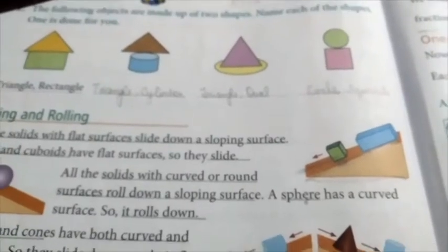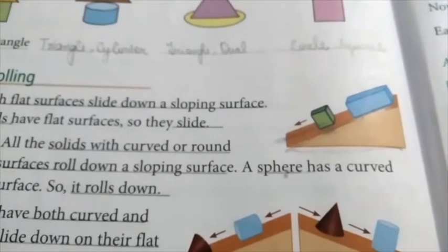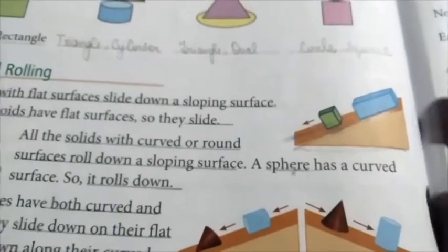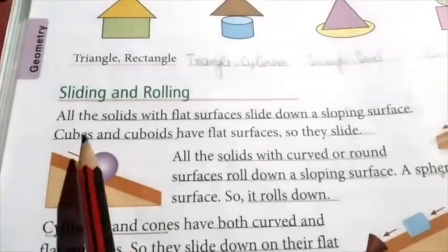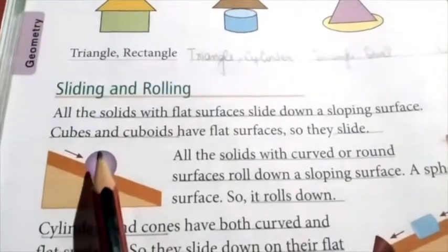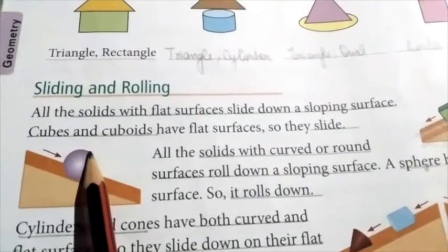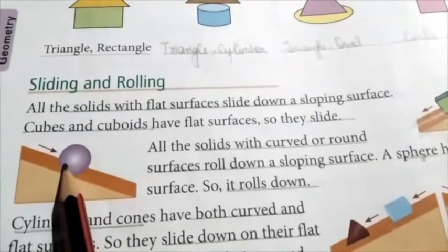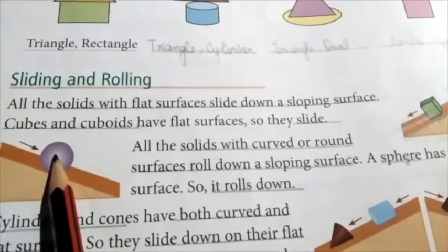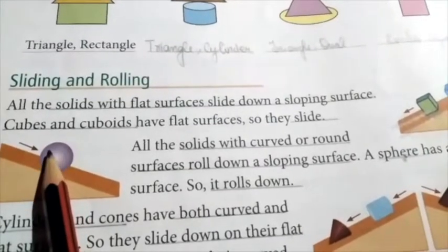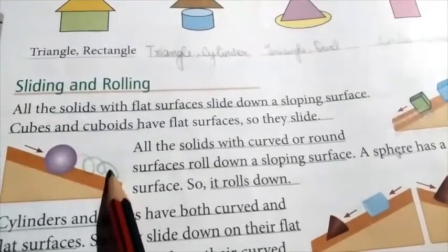Now, on a slanting surface, if you keep a circle-shaped solid — that is a solid with a curved and round shape — you know the shape of a circle is curved. When that curved solid is placed on the slanted surface, it will roll and come down.